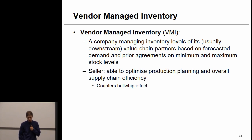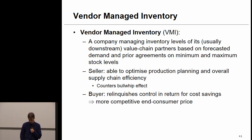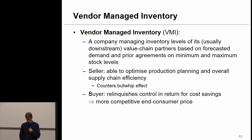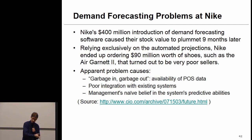One way to deal with the bullwhip effect is vendor managed inventory, or VMI, whereby a company manages inventory levels of its downstream value chain partners based on forecasted demand and prior agreements on minimum and maximum stock levels. As a supplier, you get direct access to the manufacturer's inventory, allowing you to optimize production planning and overall supply chain efficiency. The buyer loses some control but gains cost savings that can translate into a more competitive end consumer price.